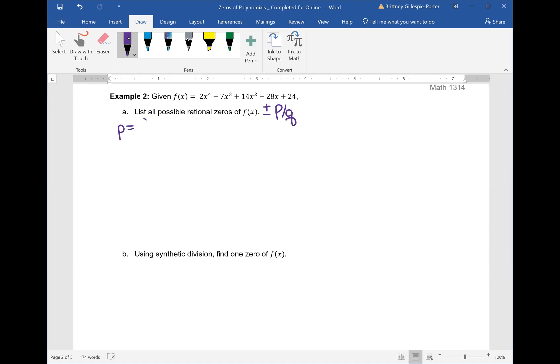To find the possible rational zeros, remember that's plus or minus our values of p over q. Here p is going to be our factors of our constant, which is 24. And again, I am going to use the rainbow method.